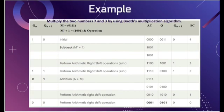We again check the last digits. The value is 0 and 0, so we perform an arithmetic right shift operation, keeping the first digit the same and shifting right. We continue this process until our cycle count reaches 0. The final answer is stored in AC as 0001 and Q as 0101.